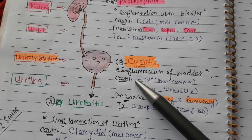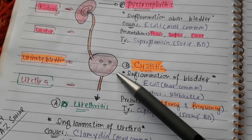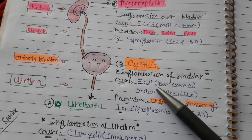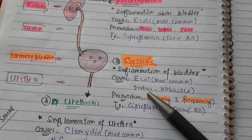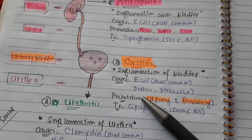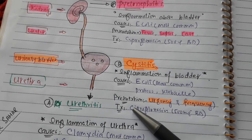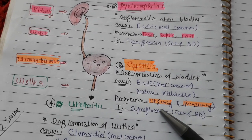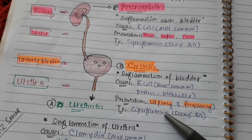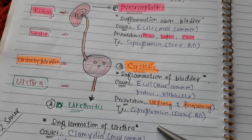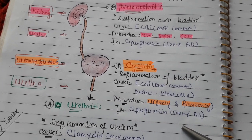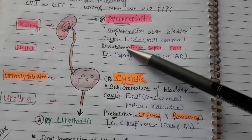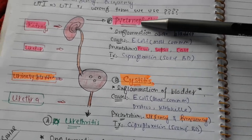For cystitis — which is inflammation of the urinary bladder — the most common cause is E. coli. It can also be caused by Proteus and Klebsiella. The patient presents with urgency and frequency. The treatment is ciprofloxacin 500 mg twice a day.